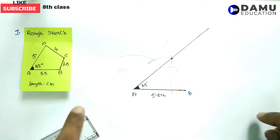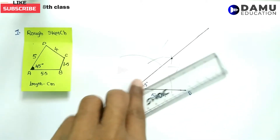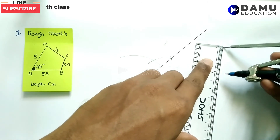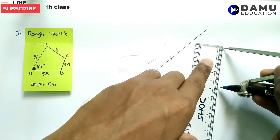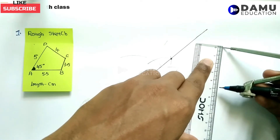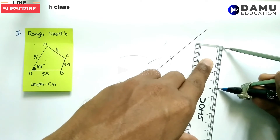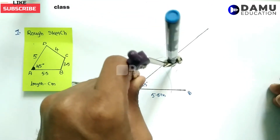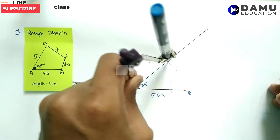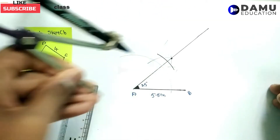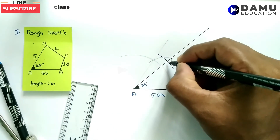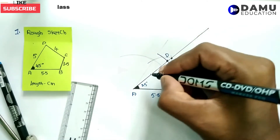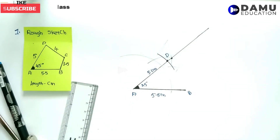Now the AD length is 5 centimeters. From A as center, using the compass set to 5 centimeters, draw one arc along the 45-degree ray. The point where the arc intersects the ray is point D, so AD equals 5 centimeters.